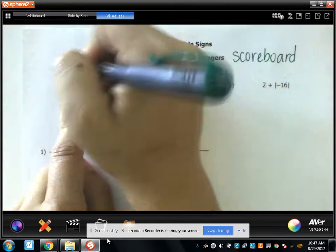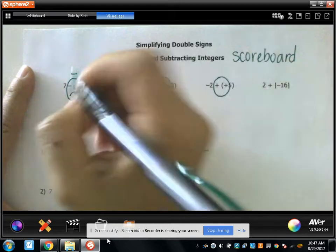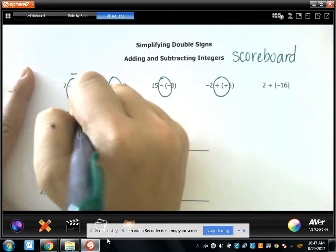So instead of 7 minus plus 9 we only want one sign in between those two numbers. This looks like someone got hit in the eye. He's upset. That's a negative feeling. So really this is 7 minus 9.